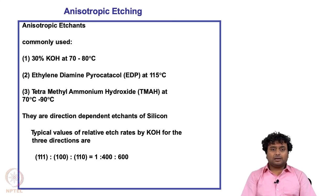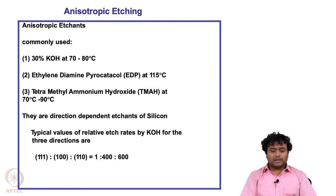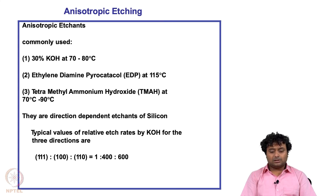These etchants are dependent on direction. Along the 100, 110, or 111 planes the etching rate is not the same. Typical relative etching rates are: 111 to 100 to 110 is 1 to 400 to 600 — and that difference is pretty huge.